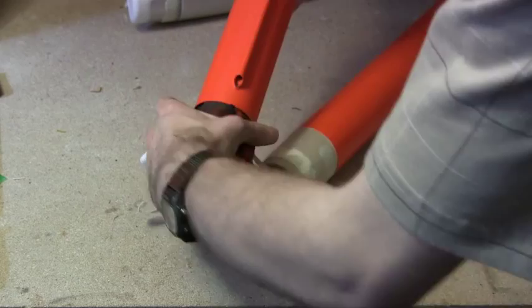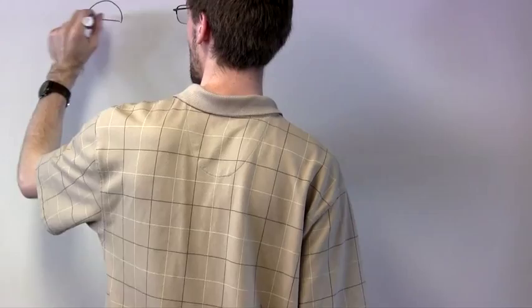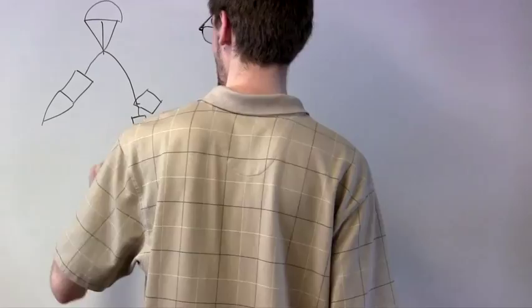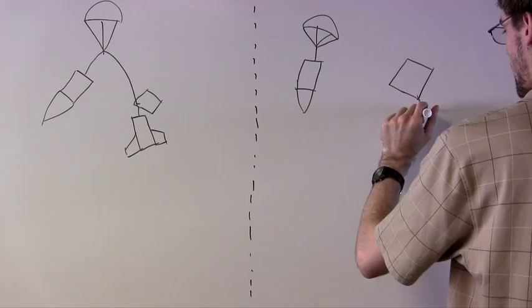Another major choice for the recovery system is whether the rocket falls as one piece or as separate pieces. Sometimes competition rules require us to go with one or the other. In 2014, the rocket had to fall together. But if the choice is available, consider the following.